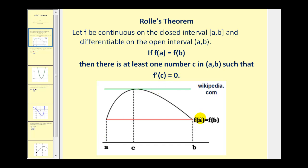Let's take a look at this sketch. If f of a is equal to f of b, you can see the secant line through those two points would be horizontal and therefore would have a slope of zero. What this theorem states is if that's true and the function is continuous and differentiable on that interval, there must be some other value c where the tangent line would also have a slope of zero, meaning the derivative of the function would be zero at c. So regardless of what this function looks like, if it's continuous and differentiable, there will be at least one value c where the derivative would equal zero.